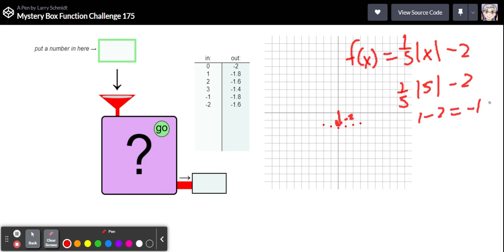So if I put in a five, we should get a negative one. So let's try that. So there's five. And we did get a negative one.